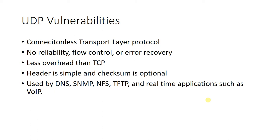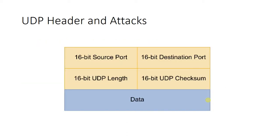When we use UDP, the header is very simple and the checksum value is optional. UDP is commonly used by DNS, SNMP, NFS, and TFTP, as well as real-time applications such as Voice over IP. Looking at the UDP header, you will notice that we have a very simple header, and this 16-bit UDP checksum is something that is optional.